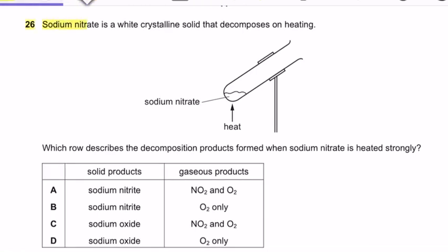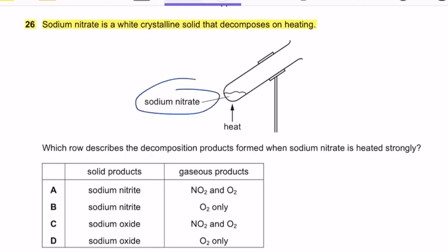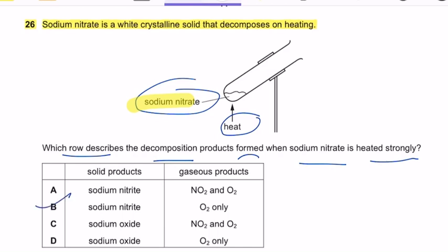Question 26: Sodium nitrate is a white crystalline solid that decomposes on heating. Which row describes the decomposition products when sodium nitrate is heated strongly? If a metal is reactive, like sodium, its compounds are not easily fully decomposed. Reactive metal nitrates always produce nitrite and oxygen. So the correct answer is option B: sodium nitrate decomposes into sodium nitrite and oxygen.